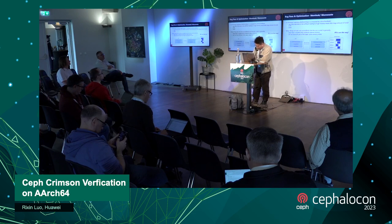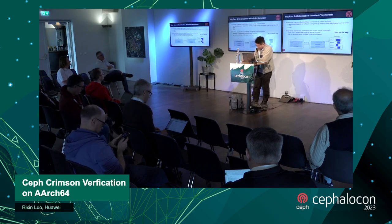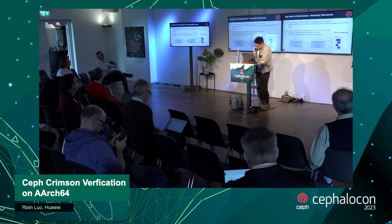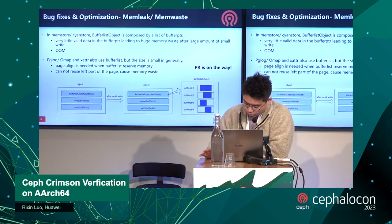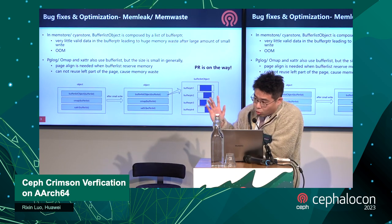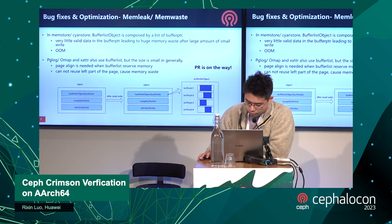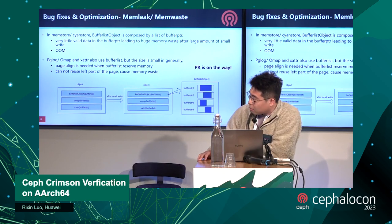The next topic is about memory leak and memory waste. In memory store and CN store, after a large amount of small writes, buffer points in buffer list objects would contain many invalid data, like the blank parts shown in the image. Also, pjlog, omap, and the extended attributes also use buffer list. When buffer list reserves memory, page alignment is needed, but we cannot reuse that part of the page, which causes memory waste.